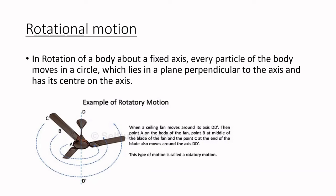The next kind of motion possessed by the rigid body is rotational motion. In rotation of a body about a fixed axis, every particle of the body moves in a circle which lies in a plane perpendicular to the axis and has its center on the axis. You see here an example of rotatory motion — a ceiling fan is rotating. Its axis is D-D dash. Point A on the body makes a circle, point B on the middle of the blade makes another circle, and point C makes another bigger circle. All these circles lie perpendicular to the line D-D dash and have their center on the axis. All these circles are coaxial.